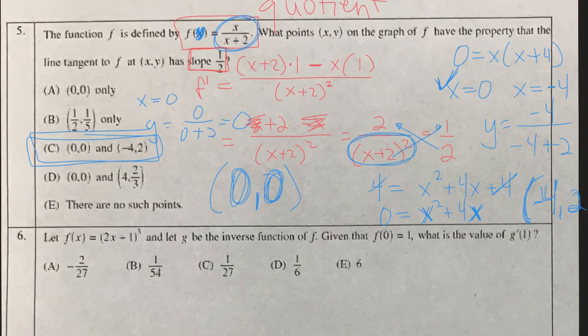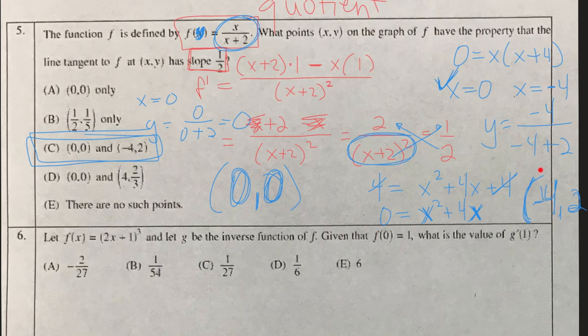The process: apply the quotient rule to get the derivative as the slope equation, set it equal to the given slope, cross multiply, solve for x, plug back in, and solve for y.